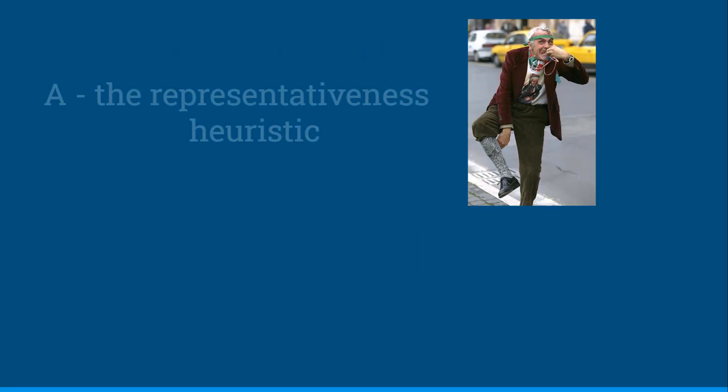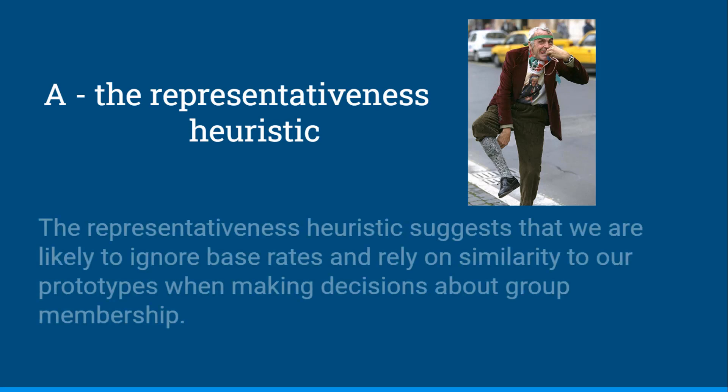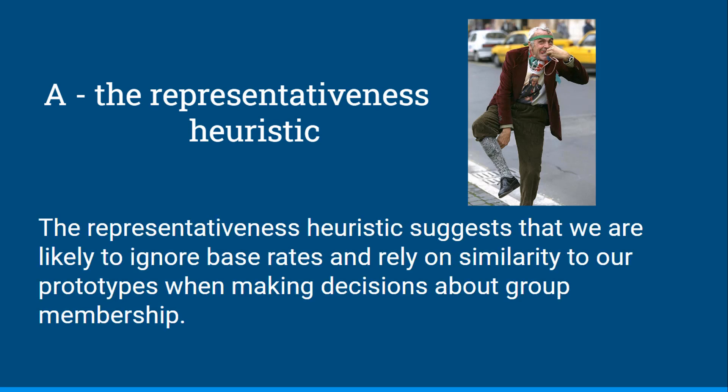This would be an example of A, the representativeness heuristic. The representativeness heuristic suggests that we are likely to ignore base rates and rely on similarity to our prototypes when making decisions about group membership.